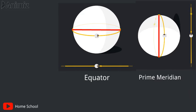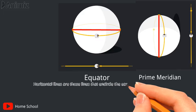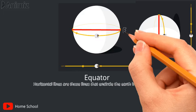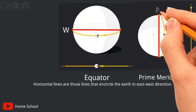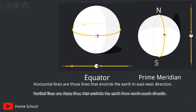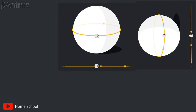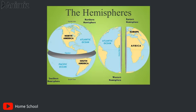The horizontal lines are those lines that encircle the earth in the east-west direction, while vertical lines run from north to south. So both the equator and the prime meridian divide the earth into two equal parts.